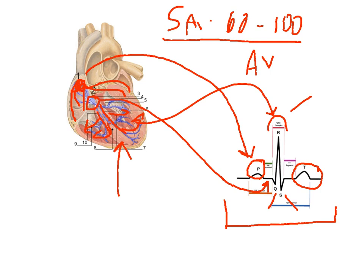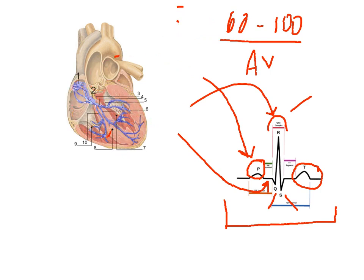The atria also repolarized, but atrial repolarization occurs during the QRS complex. So it's drowned out by the QRS. So that's basically what we are looking at when we look at a basic rhythm or we look at a normal rhythm.